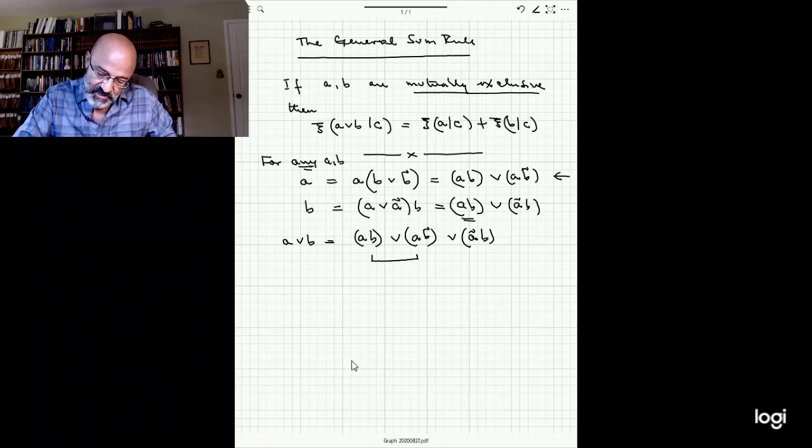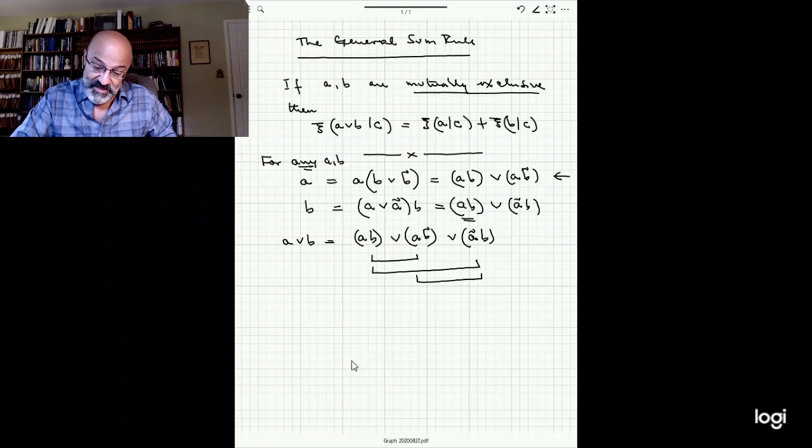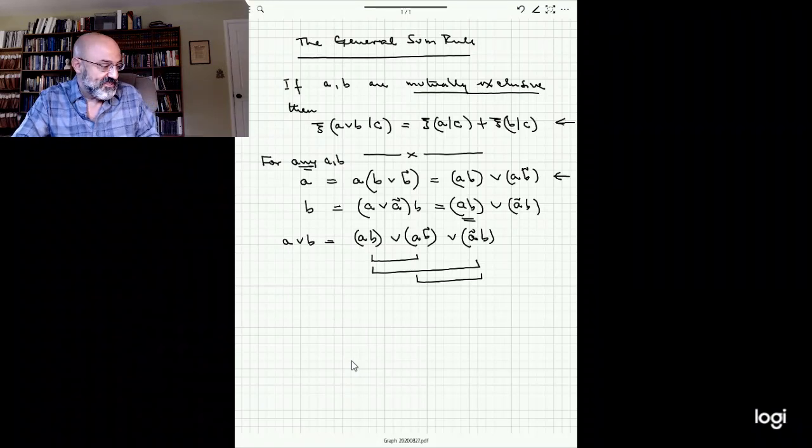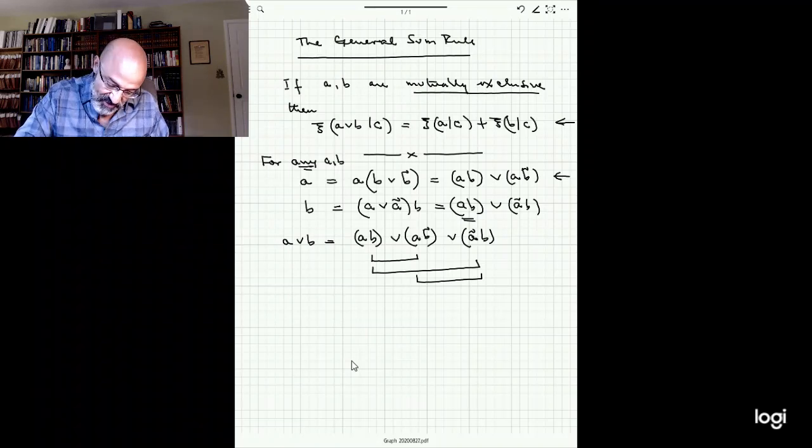It is very clear that this guy and those guys are mutually exclusive because here you have B and not B. And this guy and that guy are also mutually exclusive because here you have A and not A. And also that this guy and that guy are also mutually exclusive. So the formula that we have here for mutually exclusive propositions, it applies.